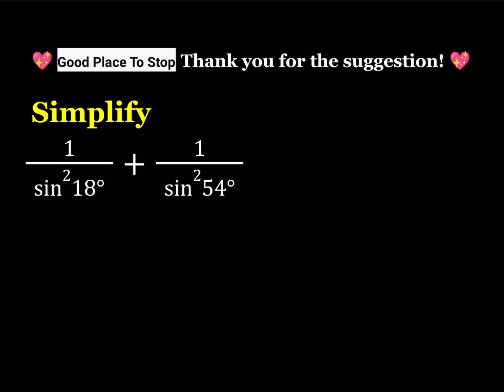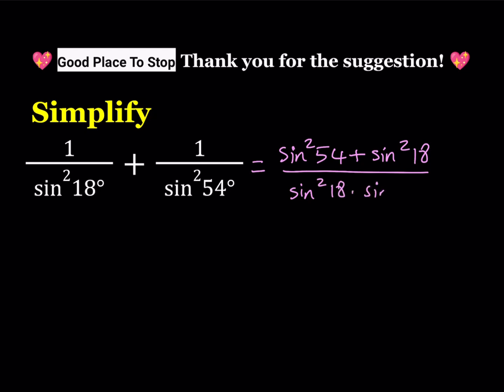First of all, I'll make a common denominator. When I do, it's going to look like this: sine squared 54 plus sine squared 18, divided by sine squared 18 times sine squared 54. At this point I would like to convert it to something that is more useful or easier to handle. So here's what I'm going to do.